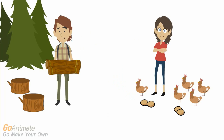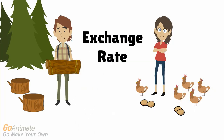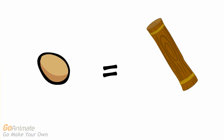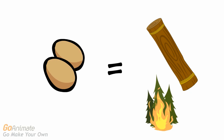Given enough time, an exchange rate will also develop — say, one egg for one medium-sized log. But these rates could change. If some of the chickens died, Mary might demand more logs per egg since she will have fewer eggs to trade. If there were a forest fire, the lumberjack might want more eggs in exchange for his wood.